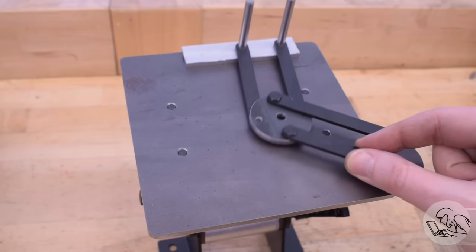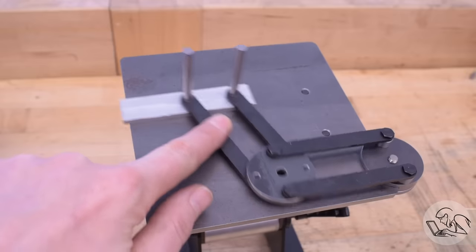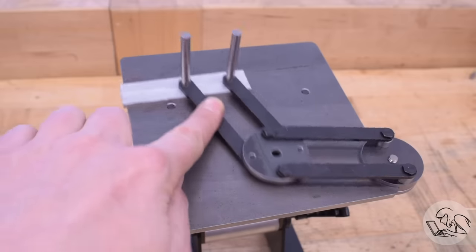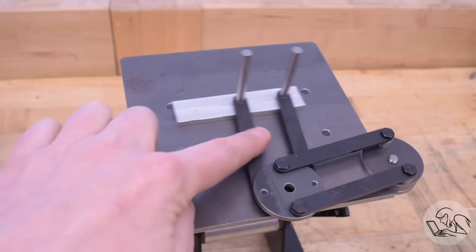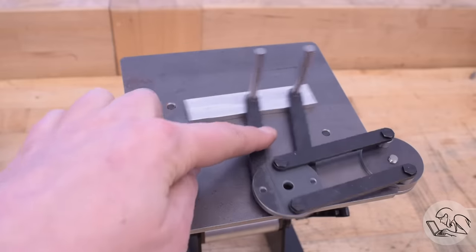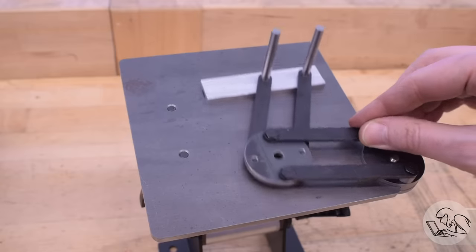As I said at the top of the show four bar linkages can be arranged to do many amazing things but this maintaining of orientation is what this particular arrangement does and it's just the thing for a tool and cutter sharpener. Very very cool. I can't wait to see how this all fits together in the final tool sharpener but you gotta love a four bar linkage.